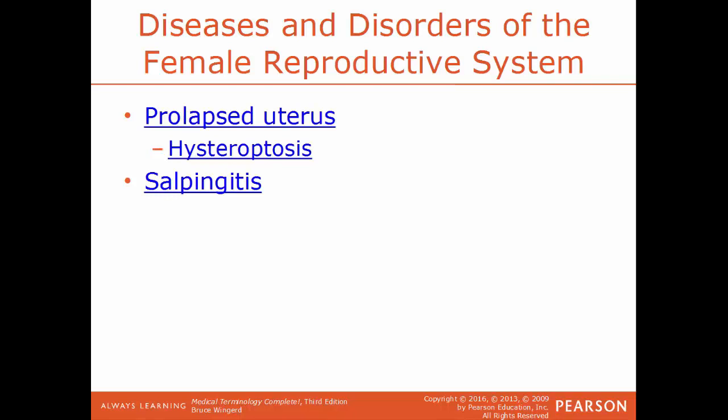A prolapsed uterus is a condition where the muscles and ligaments of the pelvic floor have become stretched and weakened, so the uterus slips down and protrudes out of the vagina. Another term for this is hysteroptosis — a drooping or sagging of the uterus. Salpingitis is an inflammation of the fallopian tube.